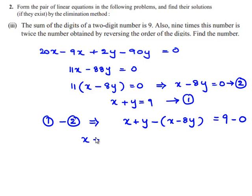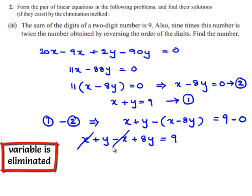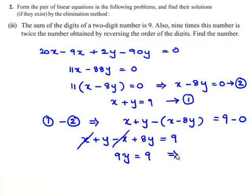This implies x plus y minus x plus 8y, 9 minus 0 becomes 9. Plus x and minus x will be cancelled. y plus 8y is 9y is equal to 9. So, y will become 1.